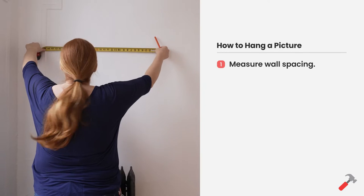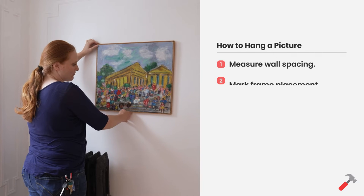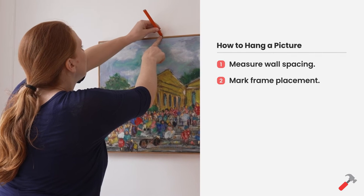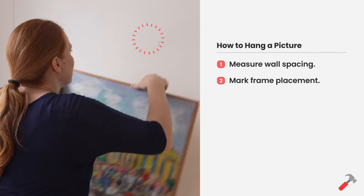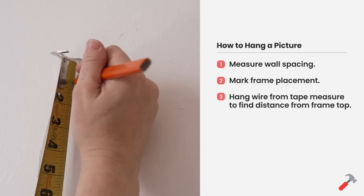Find the center of the space that you want to mount your picture in, determine the height you want your picture, mark along the top of your picture so that you know where you're starting, measure from the top of the wire to the top of the frame, subtract that from the line.